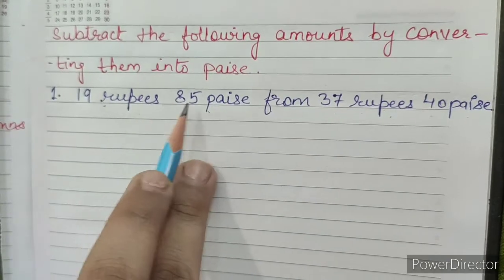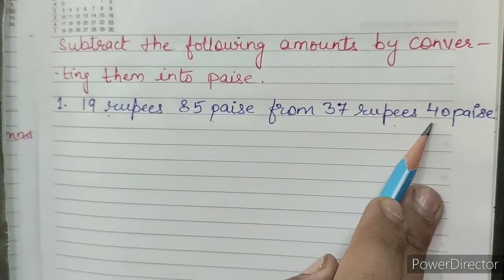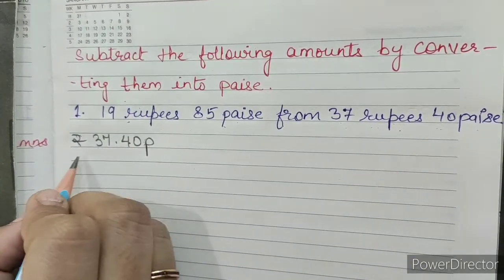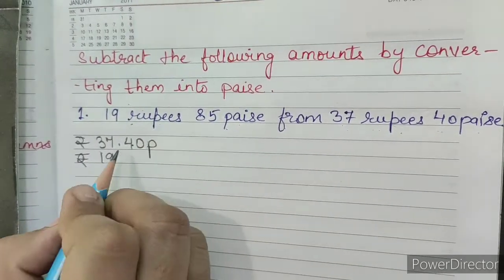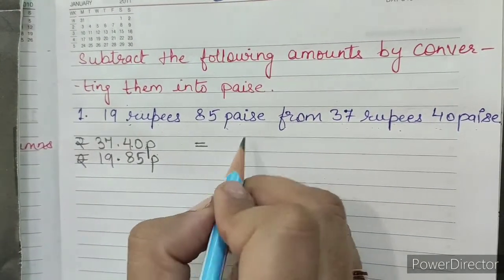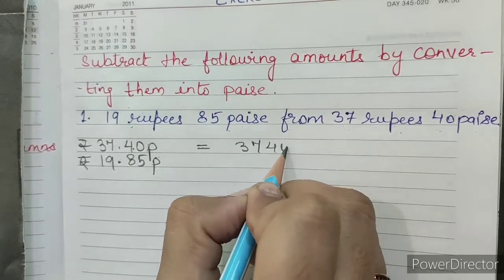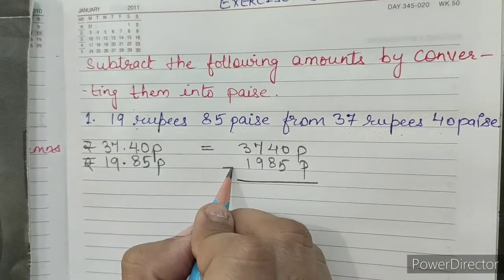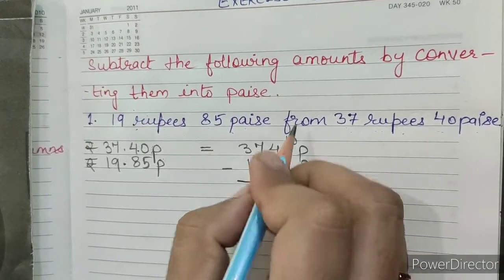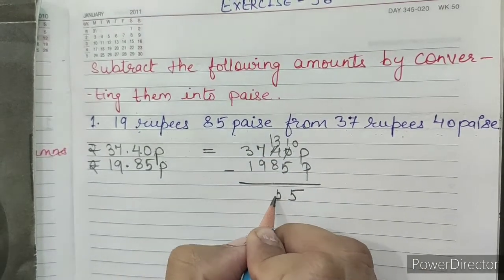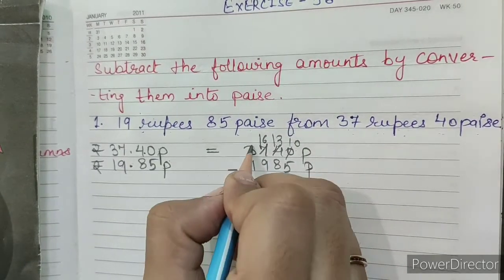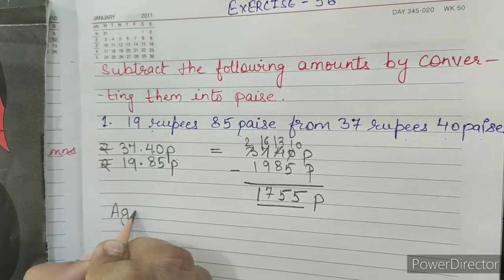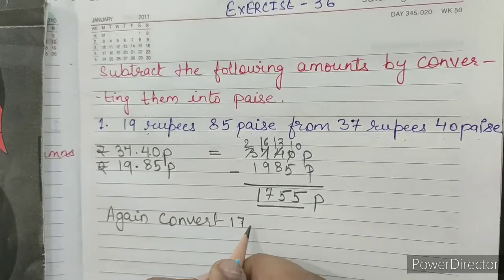So we have to subtract 19 rupees 85 paise from 37 rupees 40 paise. First of all we'll write 37 rupees 40 paise upon 19 rupees 85 paise. Now we will convert: 3740 paise minus 1985 paise. Now we subtract: 10 minus 5 is 5, 13 minus 8 is 5, 16 minus 9 is 7, and 2 minus 1 is 1. So we get 1755 paise.